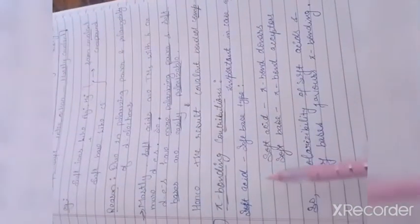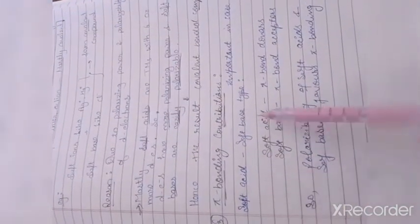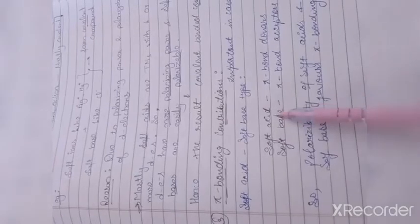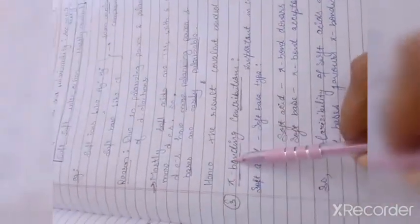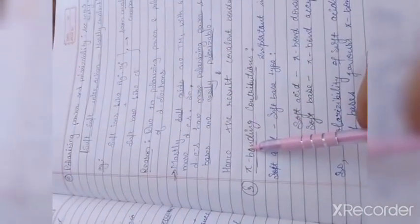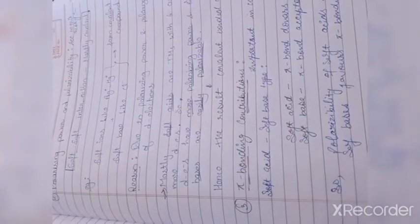The last one is pi bonding contribution. यह important है in case of soft acid and soft base type. जो soft acid होते हैं, these are pi bond donors and soft bases are pi bond acceptor. So, the polarizability of soft acid and soft bases favors pi bonding. These are theoretical bases of hardness and softness. There are many other concepts also. These are important ones.